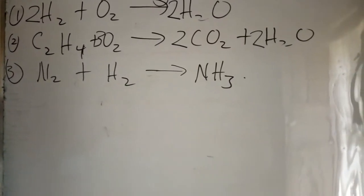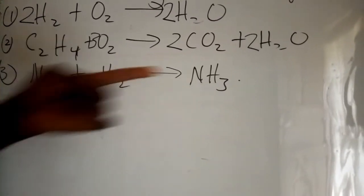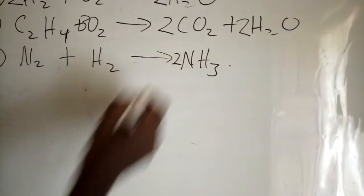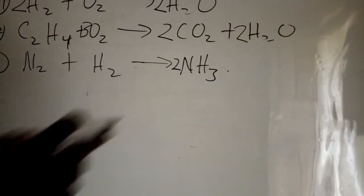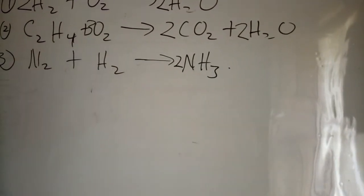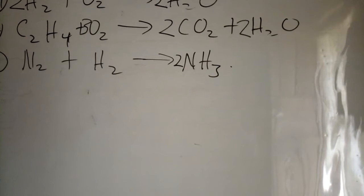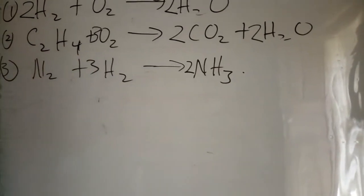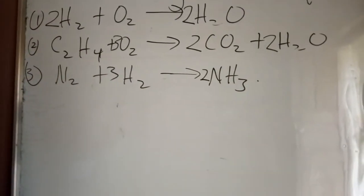Looking carefully at this equation, N2 + H2 → NH3, our nitrogen is two here and one there. So you add 2 to NH3. Our nitrogen is now balanced. Now our hydrogen, two times three, is six on the right. Here is two on the left. What number do we multiply by two to get six? It's three. So we add 3H2. The equation is now balanced: N2 + 3H2 → 2NH3.